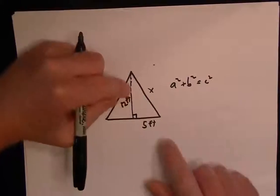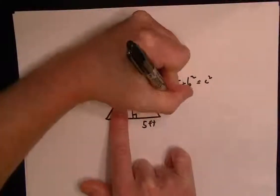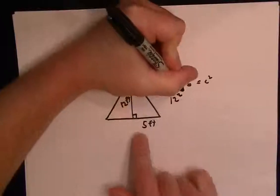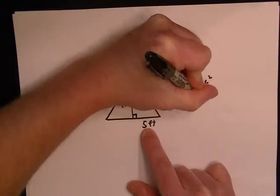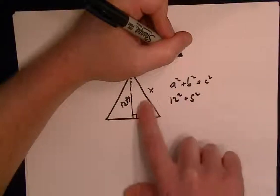If we apply the formula, we take one side of the triangle, 12 squared, plus the other side, 5 squared, equals the hypotenuse squared. The hypotenuse is this long side away from the right angle, so in this case it equals x².